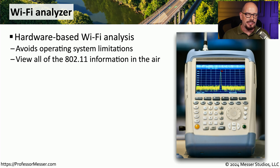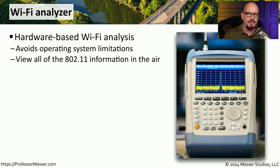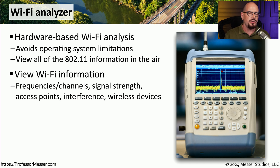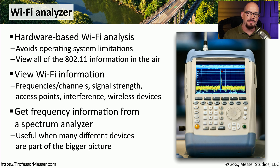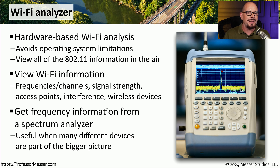If you need detailed wireless information, it may require specialized hardware, and you can use a Wi-Fi analyzer to provide that level of detail. This can see all of the 802.11 information going through the air and show you other information sharing those same frequencies. It can provide channel strengths, show what channels are in use, show what access points might be in the area, and identify potential sources of interference. A more advanced Wi-Fi analyzer may include a spectrum analyzer where you can see an entire range of frequencies — whether associated with an 802.11 wireless network or some other source, such as a microwave oven.